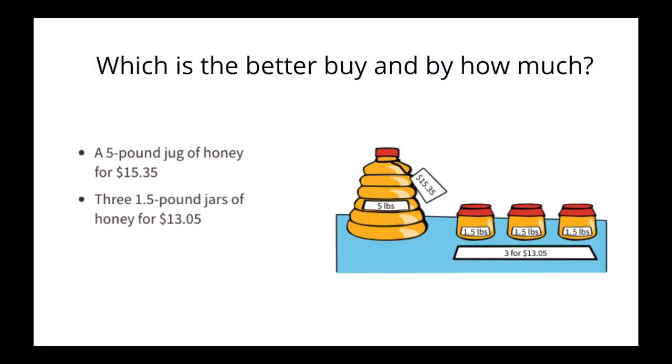So let's begin with the warm-up. Which do you think is the better buy? The five pound jug of honey for $15.35 or the three one and a half pound jar of honey for $13.05? Pause the video and take a moment to determine a good strategy to prove which one is the better buy and why. You may use a calculator for this.